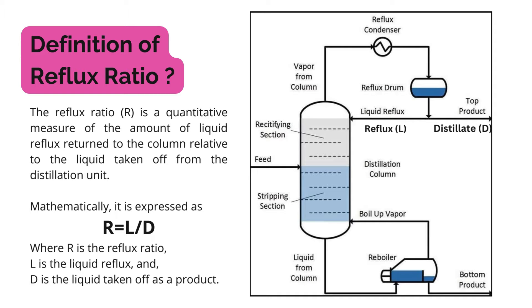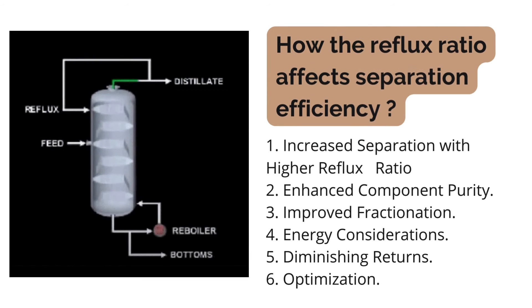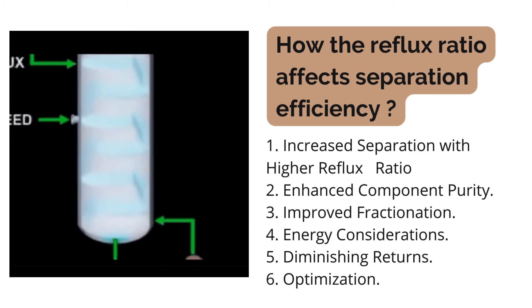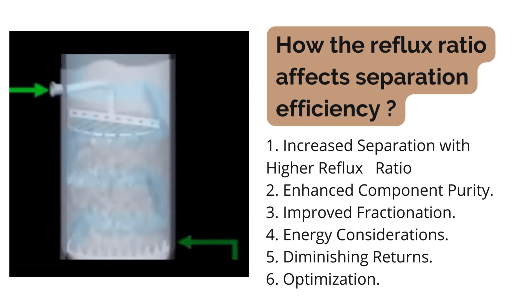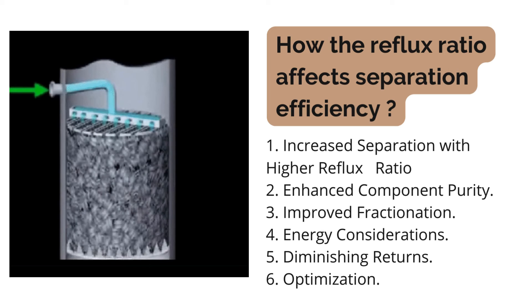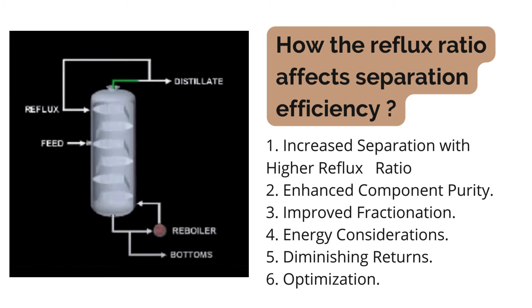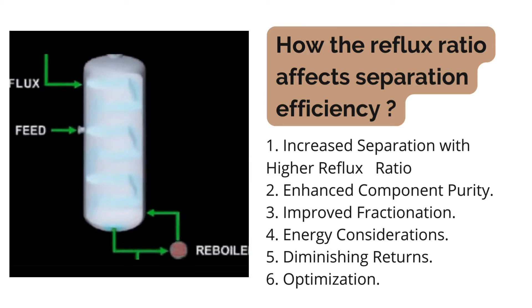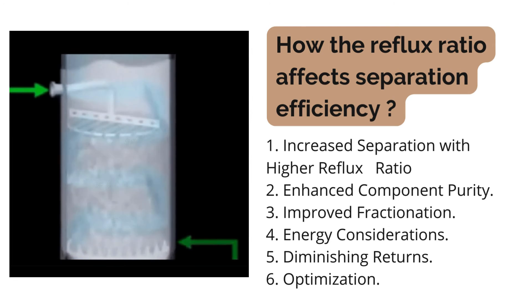This ratio plays a crucial role in optimizing the trade-off between separation efficiency and energy consumption. Moving to how reflux ratio affects separation efficiency: the first point is increased separation with higher reflux ratio. A higher reflux ratio generally leads to better separation because more liquid returns to the column as reflux, increasing the number of equilibrium stages. With more stages, there are more opportunities for components to vaporize and condense, promoting better separation.